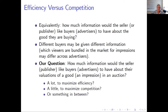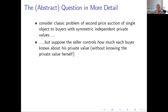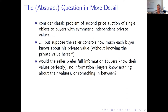Let me describe this question in a clean abstract setting. Consider the classic problem of selling a single good in a second price auction to a finite set of buyers with symmetric independent private values — you can't think of a simpler auction setting. Suppose the seller could control how much each buyer knows about his own private value. The seller has the ability to control this without knowing the private value himself. The question is: does the seller like full information, no information, or something in between?